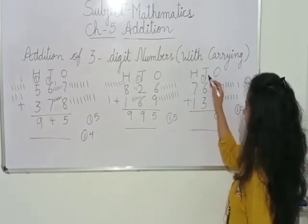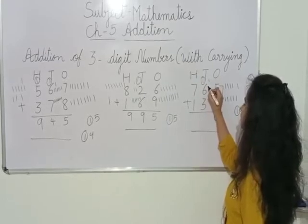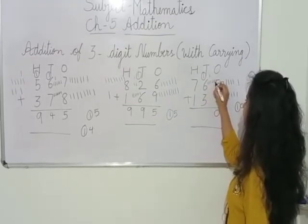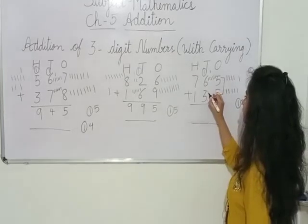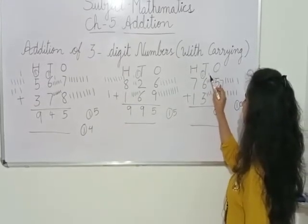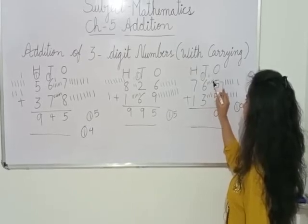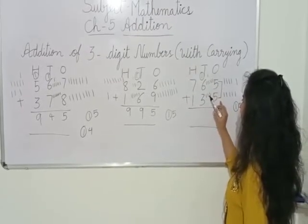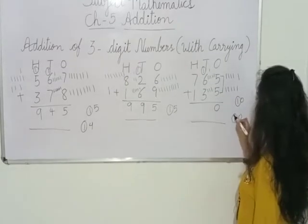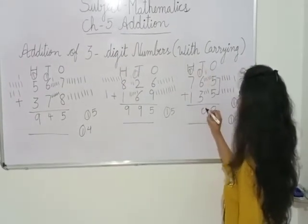Now for the 10's place: 1 is carried, we draw 1 line. 6 is there, we draw 6 lines: 1, 2, 3, 4, 5, 6. Here we draw 3 more lines: 1, 2, 3. Now let's count: 1, 2, 3, 4, 5, 6, 7, 8, 9, 10. Again we got 10, so we carry forward this 1 to the 100's place and write 0 here.